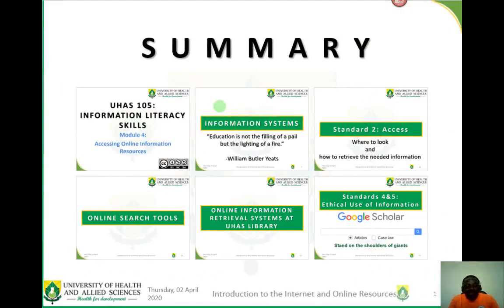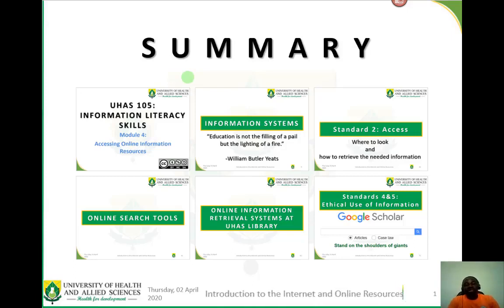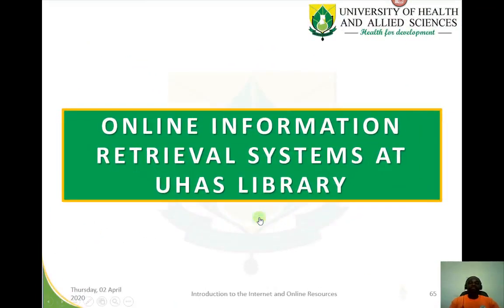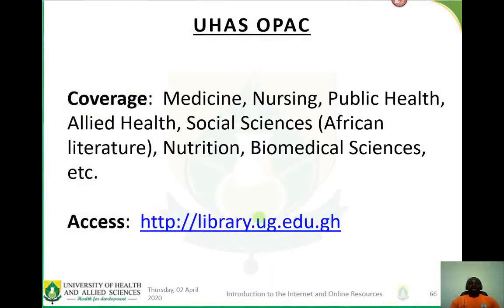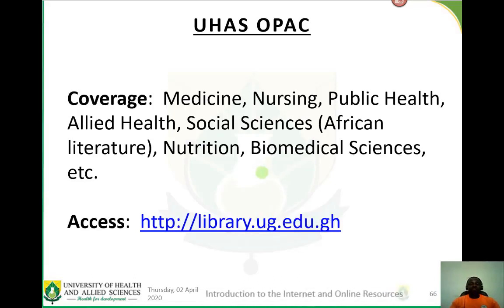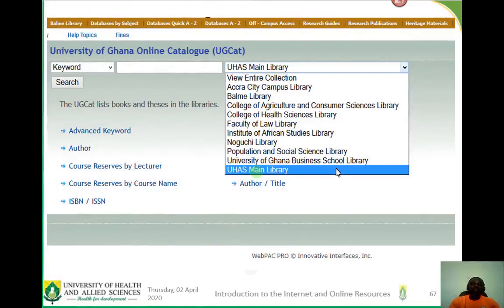Now that we have explored online search tools, let's look at the information retrieval systems available at the UHAS library and how you can use them to access information online. The UHAS OPAC covers all subject areas handled at the University of Health and Allied Sciences and can be accessed through the university library website. This is what the UG Cart looks like.